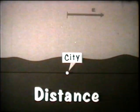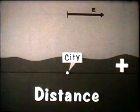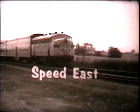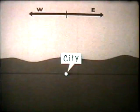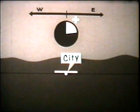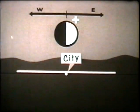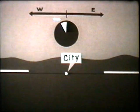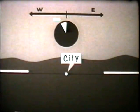We'll call distances east of the city positive and distances west of the city negative. We'll think of a train speed east as positive and a train speed west as negative. We'll call the time positive after a train leaves the city going in either direction — the light area on the right half of the clock represents positive time. We'll call the time negative before a train arrives at the city — the light area on the left half of the clock represents negative time.